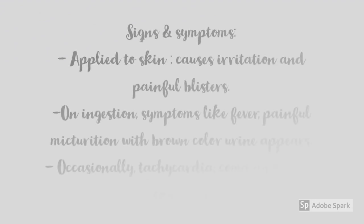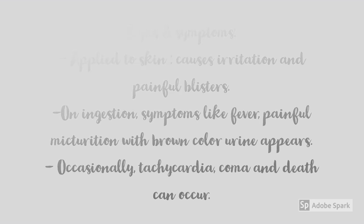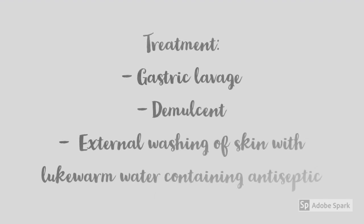Here are the signs and symptoms of Semicarpus poisoning. As discussed, the juice of Semicarpus has irritant properties. The resultant signs and symptoms due to application of juice on skin would be irritation and painful blisters. If the juice is ingested, symptoms like fever and painful micturition with brown-colored urine appear. Occasionally, tachycardia, coma, and death can occur, but these are quite rare.